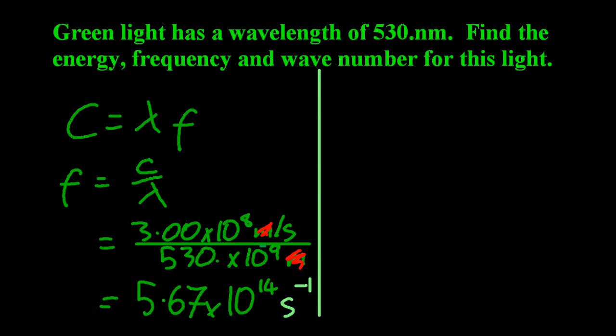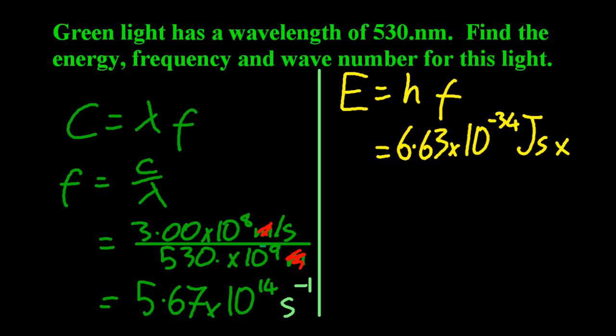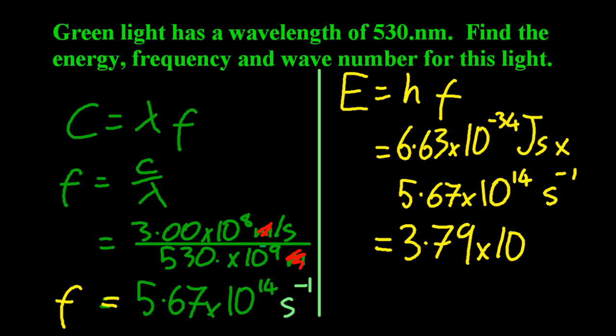Trying to work out the energy. Planck's constant, again, is given in the data booklet, multiplied by the frequency that I just worked out. And that's going to give me a very teeny-weeny number. It's the energy of one photon. Working out the units, second cancels with per second, so that just gives me joules.